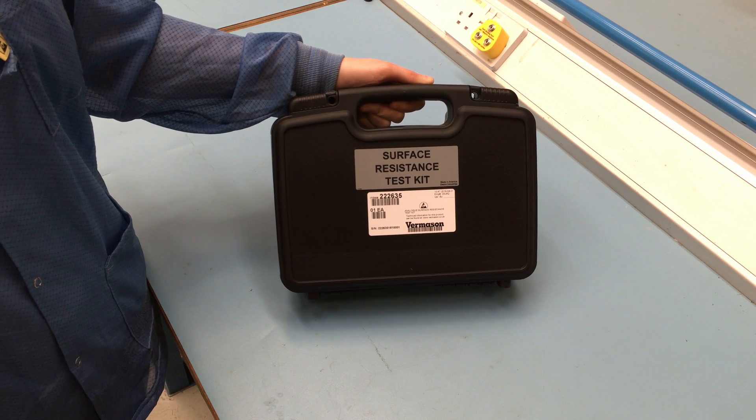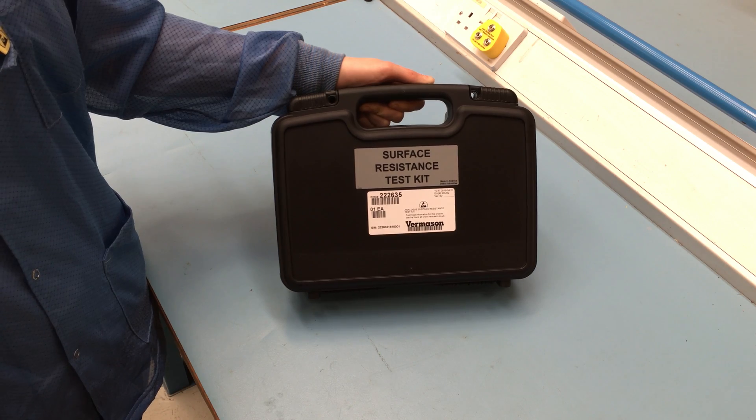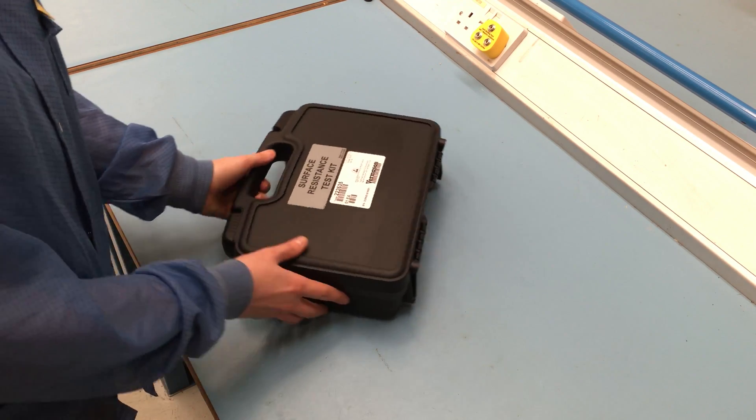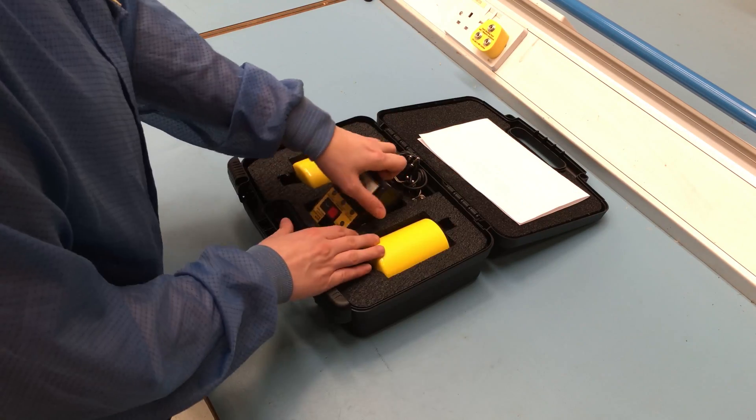Today we are taking a look at the Vermeeson Analog Surface Resistance Meter. The unit is available as a standalone unit, the 222637, and as a kit, the 222635.